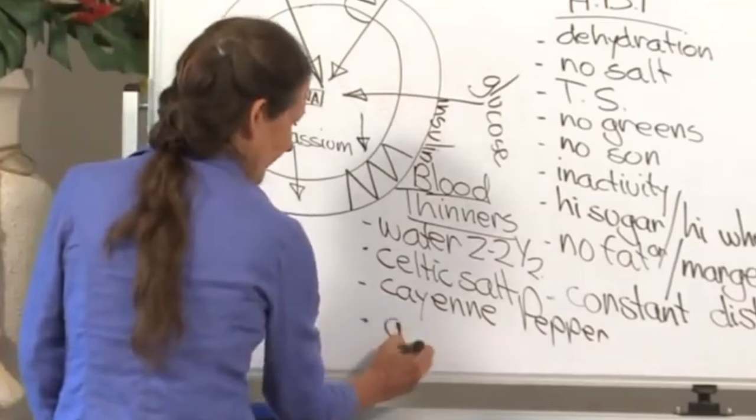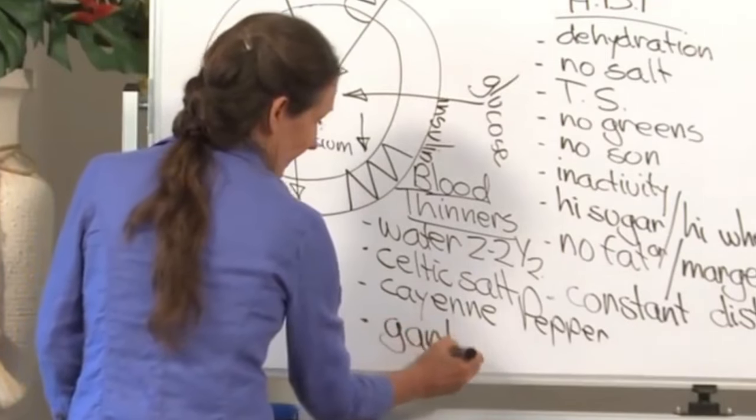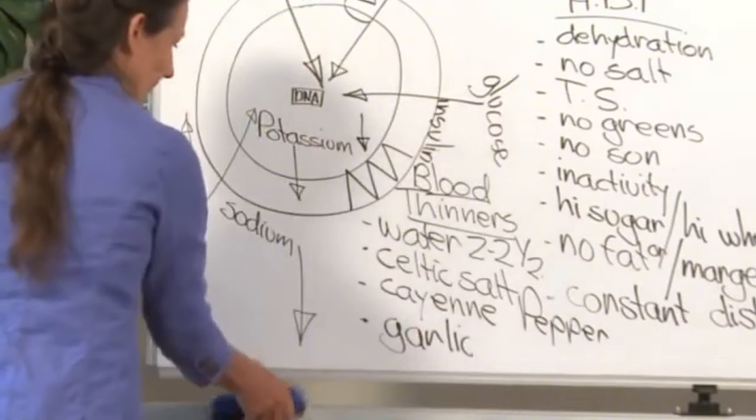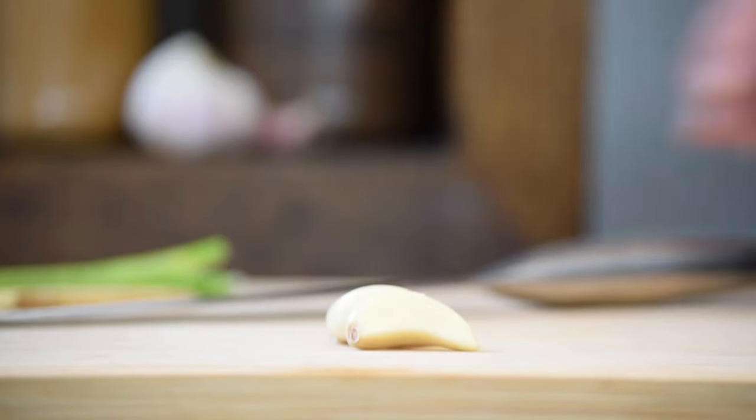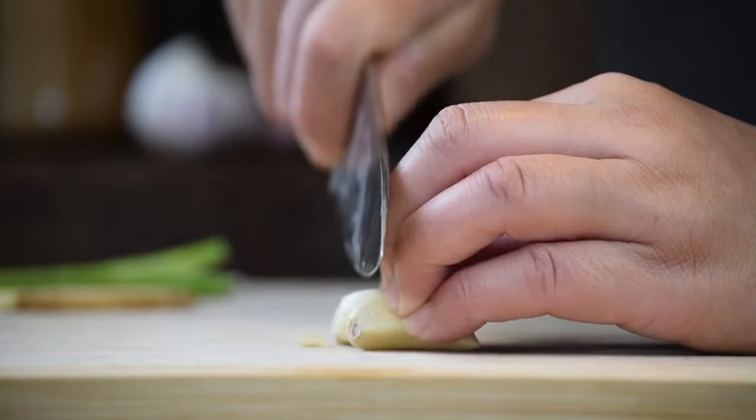Garlic. There's a lot of information coming out now, has been really for the last 10 years, on what a powerful herb garlic is regarding the blood and regarding the heart.